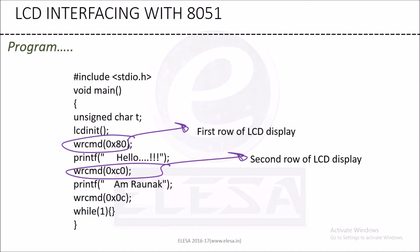Then we write in the first row 'Hello', and then write in the second row using printf 'I am Raman'. The while(1) is for a continuous loop, so the display will remain in a continuous loop.